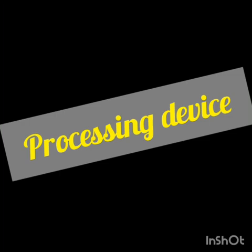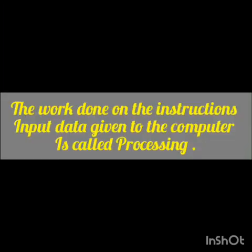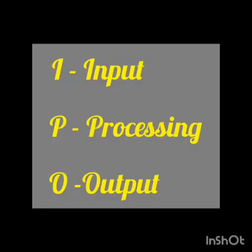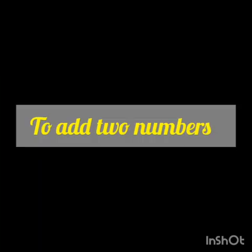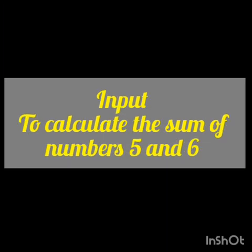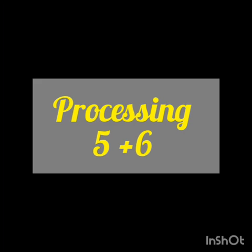Now we will see the processing device. The work done on the instructions and input data given to the computer is called processing. I-P-O: I is input, P is processing, O is output. Whatever instructions you give to the computer, it processes them and after that you get the output. For example, to add two numbers 5 and 6, the input data is fed into the computer, then processing takes place: 5 plus 6, and the addition is performed by the processing device.